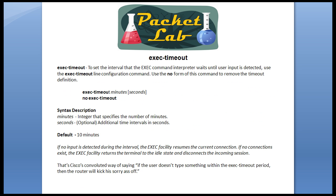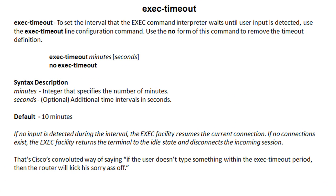This slide is directly from the Cisco documentation for the exec timeout command. It's important to note that this command is issued under line configuration — it is not a global configuration command. By default, it is enabled on all lines: your auxiliary line, console line, and VTY lines, and it is by default set to 10 minutes. That's something you probably want to commit to memory for a certification exam.